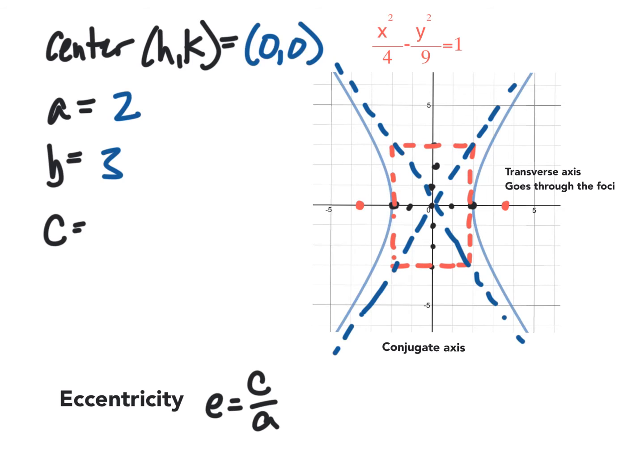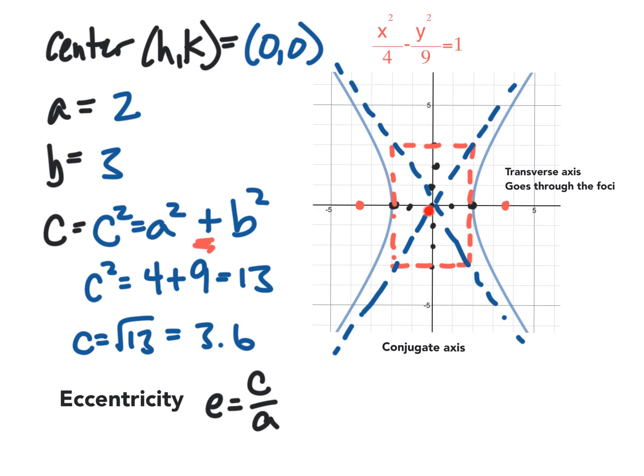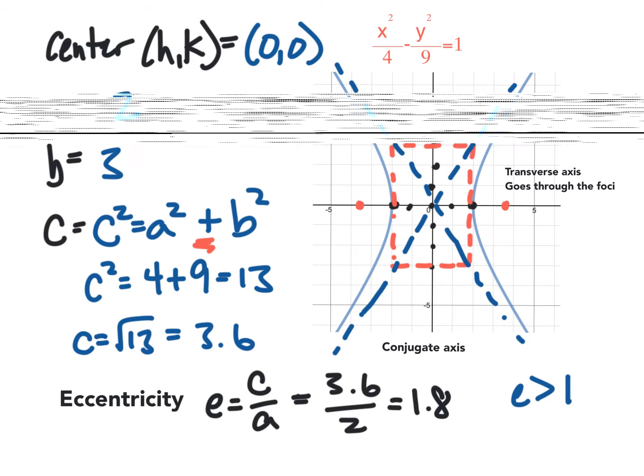All right, so let's get back to the c. How do we find c? Unlike an ellipse, c² = a² + b². So this plus is the big difference. So we get c² is 4 + 9, which is 13, giving us c = √13, which is about 3.6. So from the center, we go out 1, 2, 3, 0.6. The eccentricity is c/a. So this is 3.6 over a was 2. We get an eccentricity of 1.8. And for hyperbolas, e will always be greater than 1.